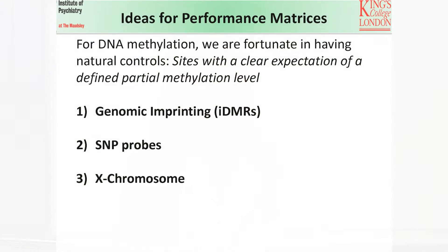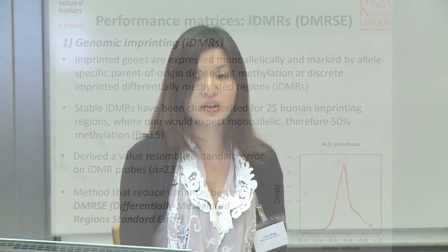We have two main desired outcomes from pre-processing steps: to get rid of unwanted technical variance, which will improve sensitivity to detect more true differences between experimental groups. Now that we know what we want to achieve, we need to find metrics that can evaluate the performance of different pre-processing steps. We're lucky in the field of DNA methylation, where we have natural controls — sites with a clear expectation of a defined partial methylation level. I'm going to go into each of them in detail.